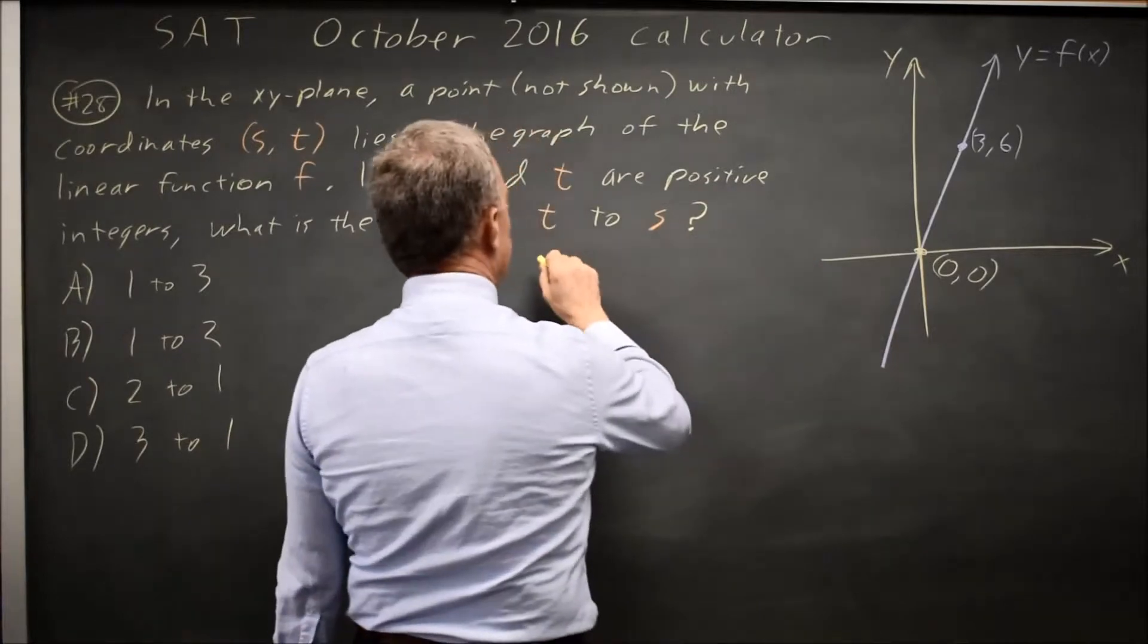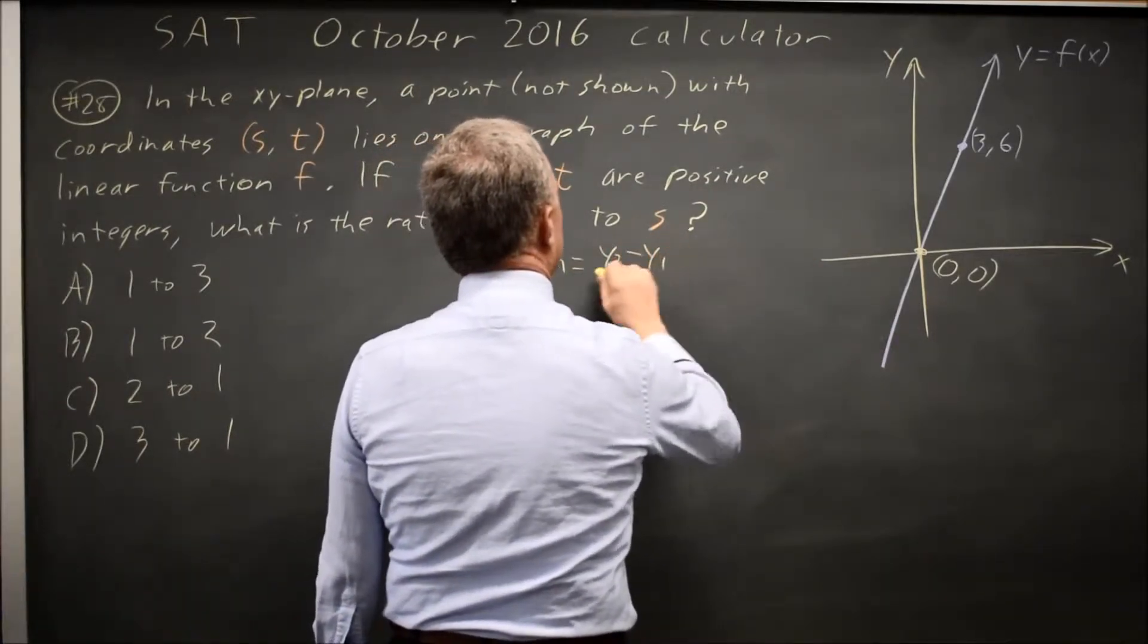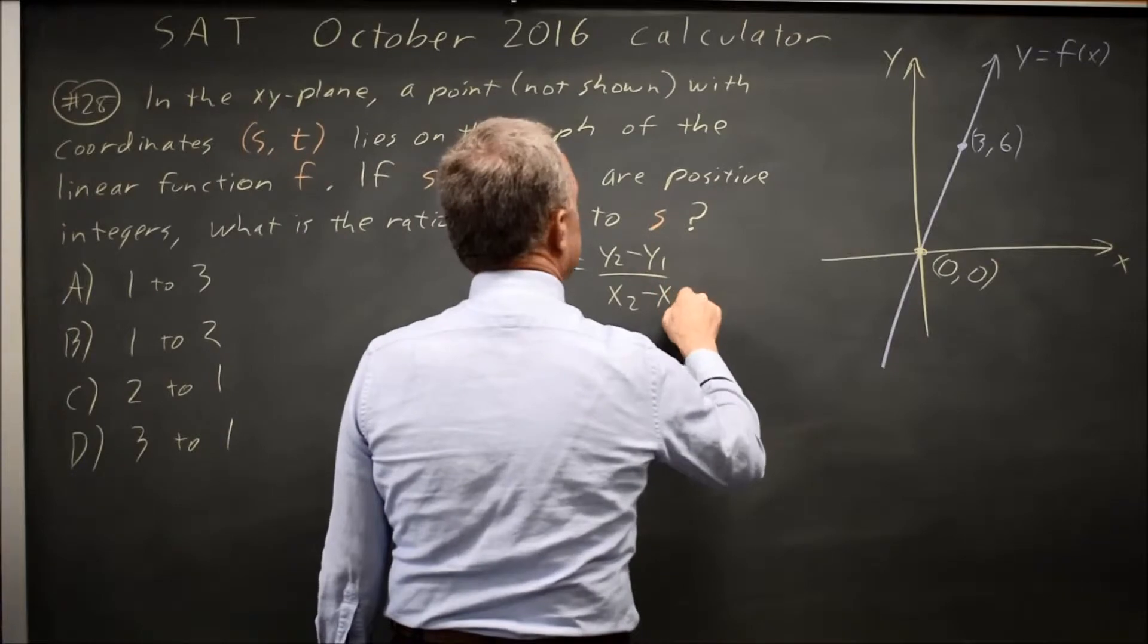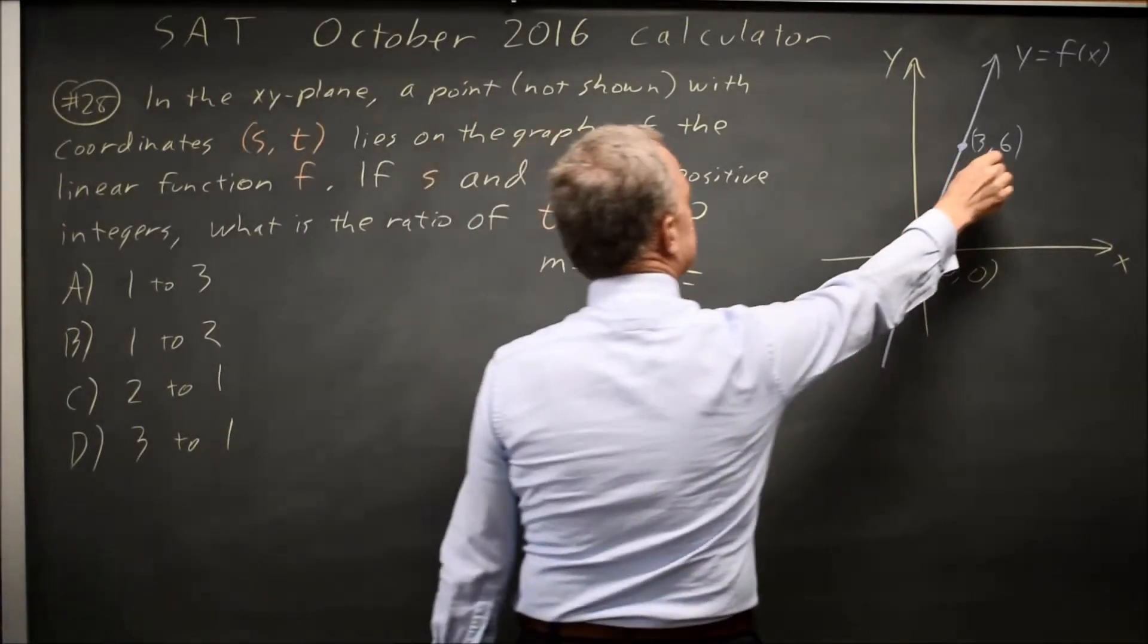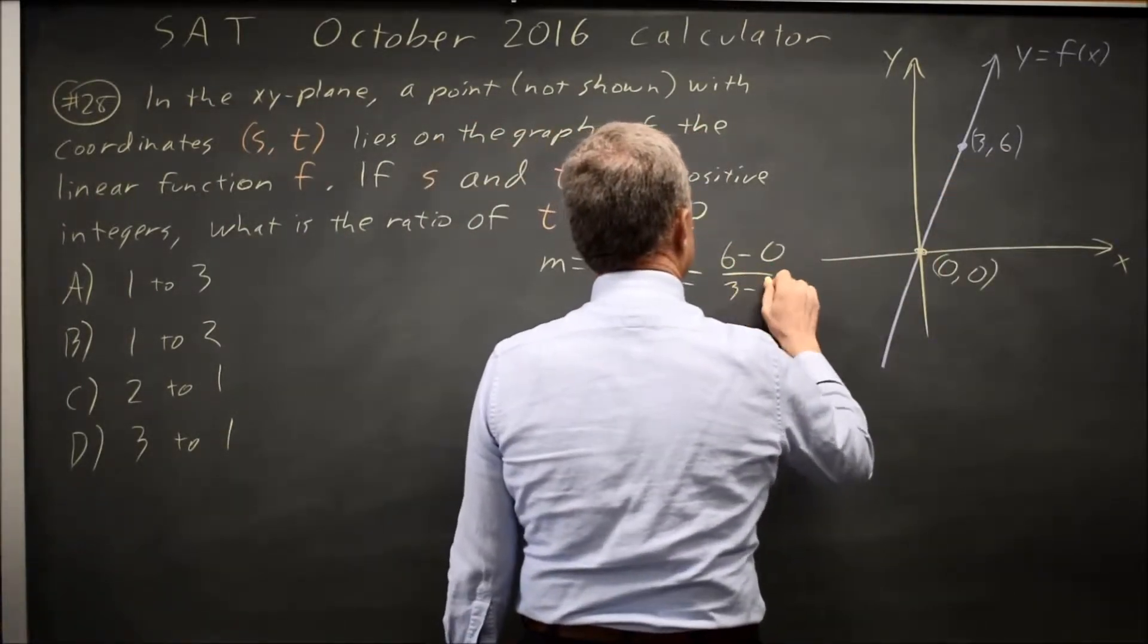Your slope is y2 minus y1 over x2 minus x1, which is 6 minus 0 over 3 minus 0, which is 6 over 3 equals 2.